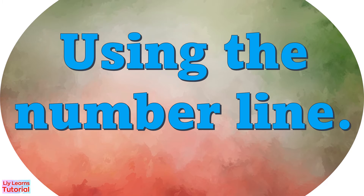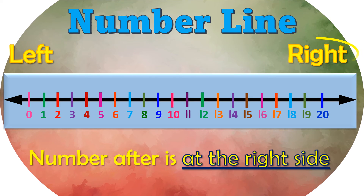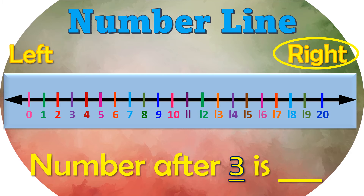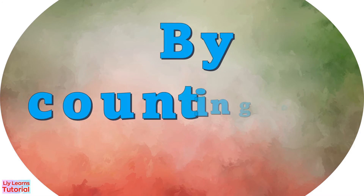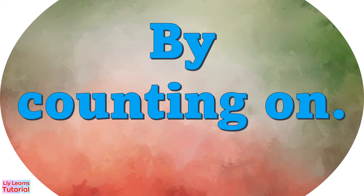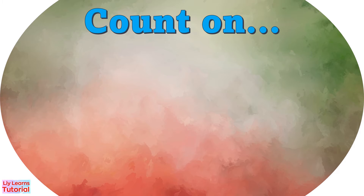This time we'll find the number after by using the number line. Remember, the number after is at the right side. Let's take a look — what number comes after three? First, we circle three on the number line, then we look at the number next to it at the right side. So the answer is four.